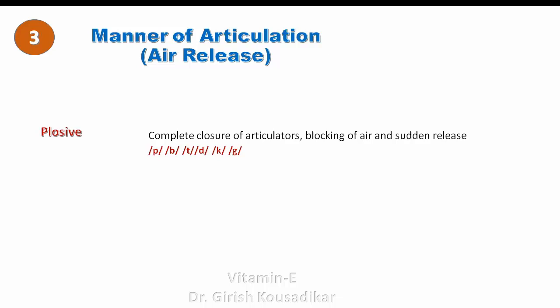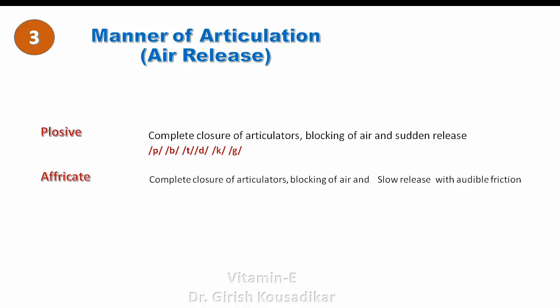The next manner of articulation is affricate. In the case of affricates, there is a complete closure of the articulators, a blocking of air, and a slow release with audible friction. The sounds are /tʃ/ (ch) and /dʒ/ (j). There is a complete closure — try to produce these sounds and you can realize it.